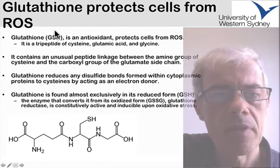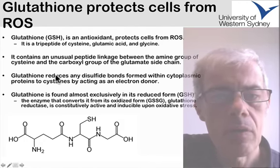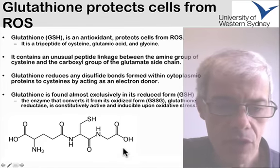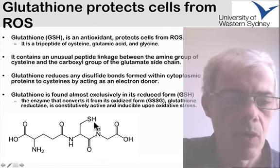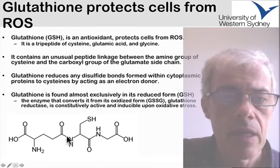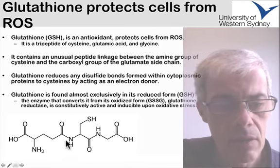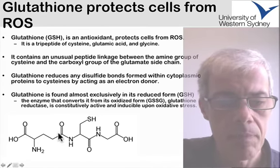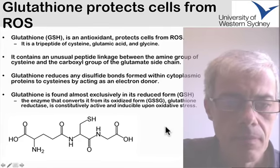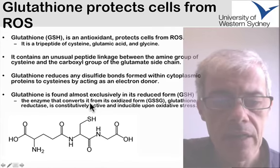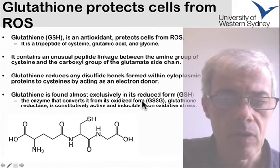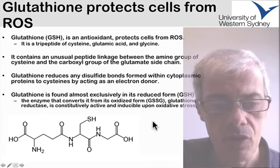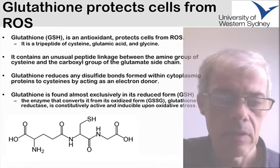To protect cells from damage, cells contain in high concentration a small tripeptide called glutathione. Glutathione consists of glycine, then a peptide bond onto cysteine, and then an unusual linkage of a glutamic acid to the amine group of the cysteine. Glutathione contains a reactive cysteine and is able to mop up the reactive oxygen, becoming oxidized into GSSG — two glutathione molecules cross-linked together by a disulfide bond.